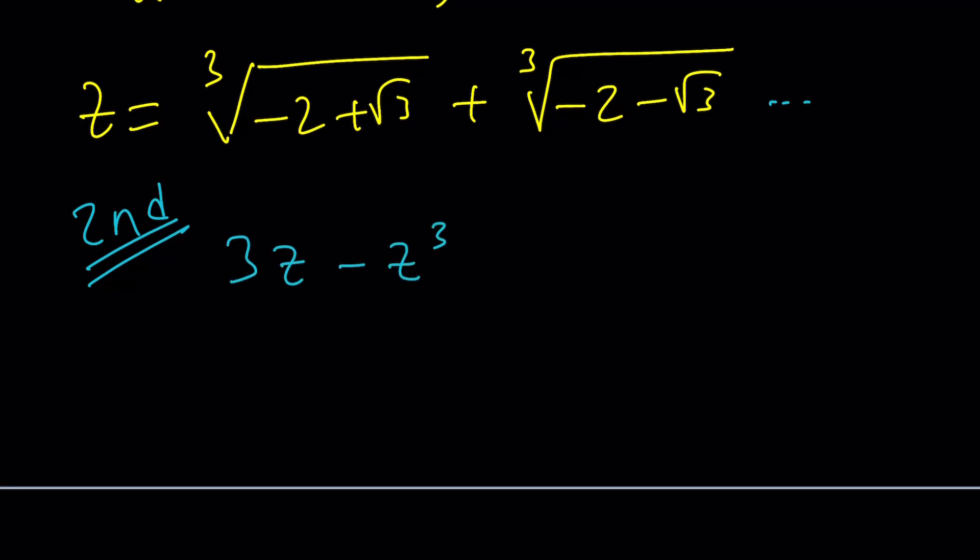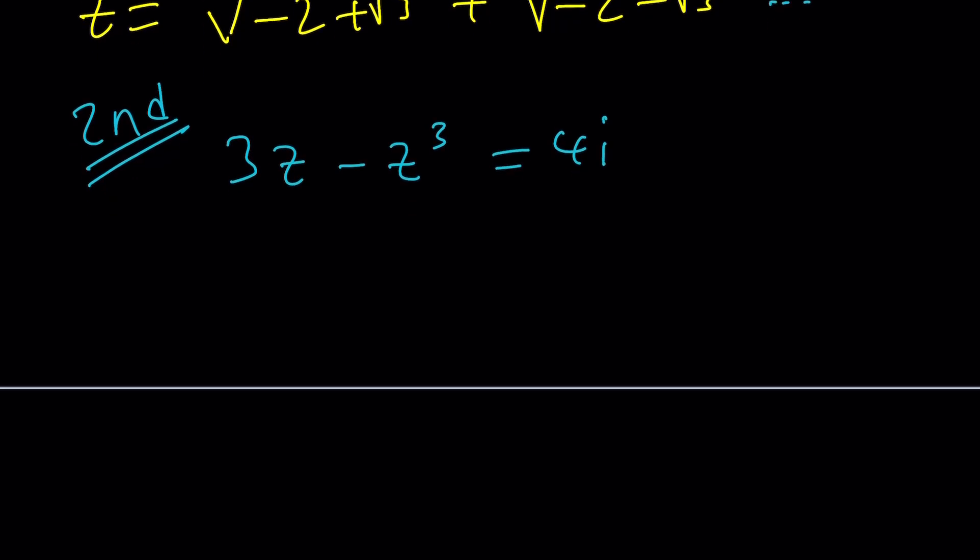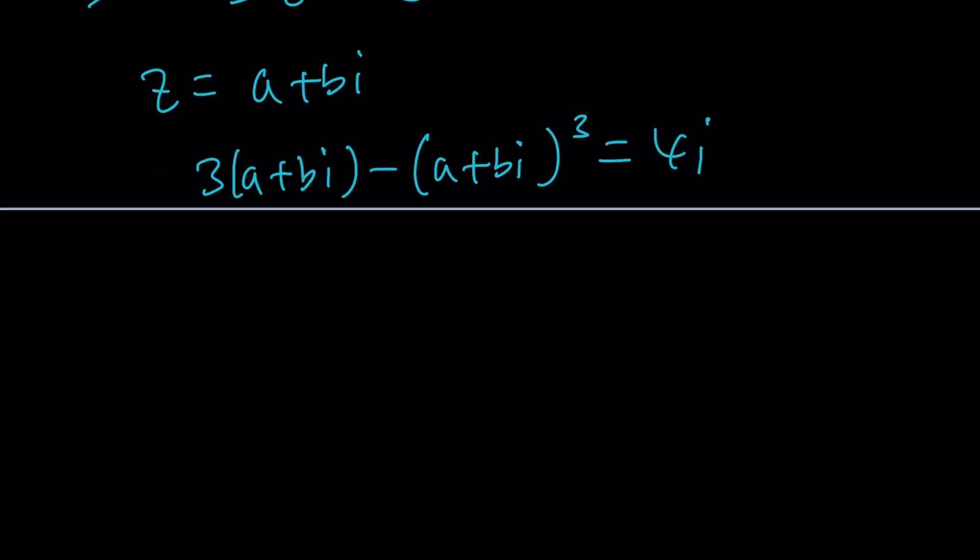3z minus z cubed equals 4i. In this equation, I could definitely guess and check, but here's the thing. You have z and z to the third. So if you think about it, z is probably a complex number. So why not replace z with a plus bi? That would make sense. Let's do it. 3 times (a + bi) minus (a + bi)³ equals 4i. And from here, compare these two complex numbers.